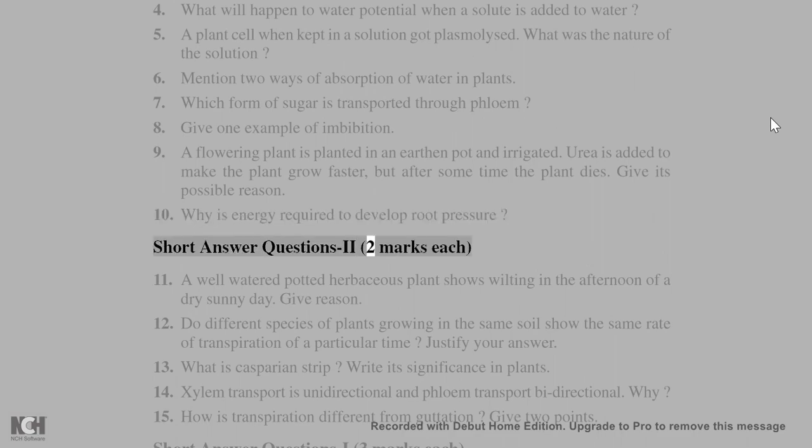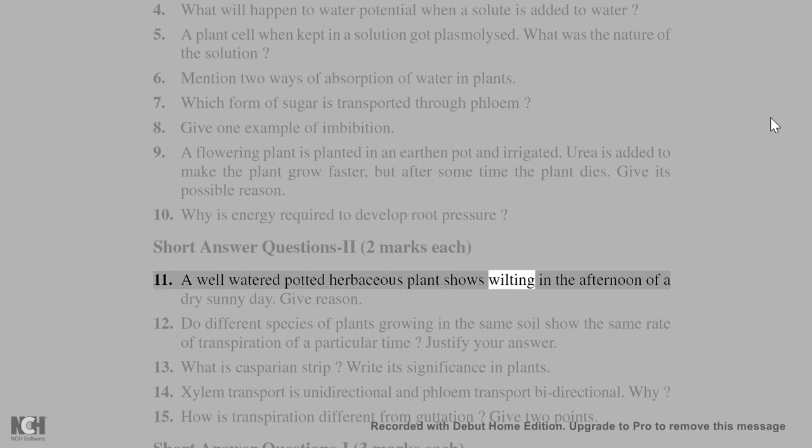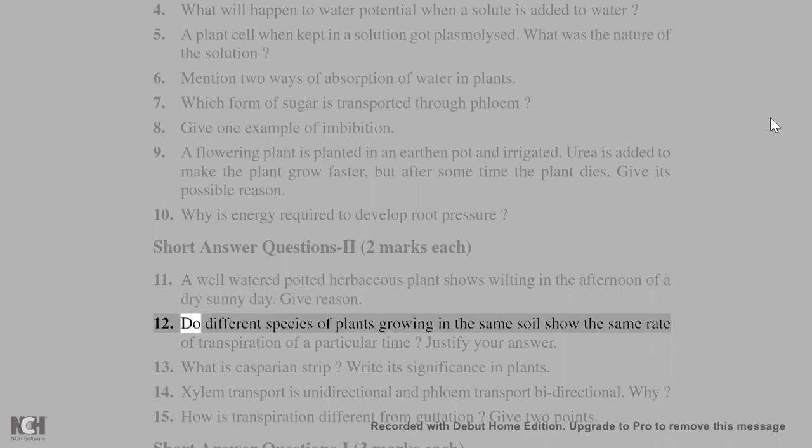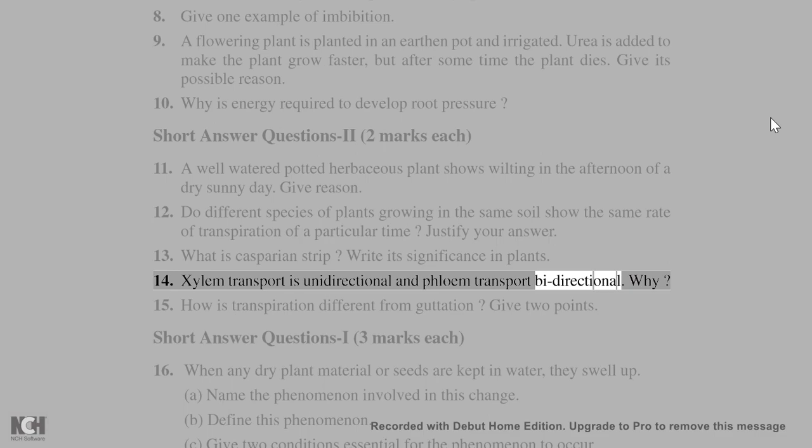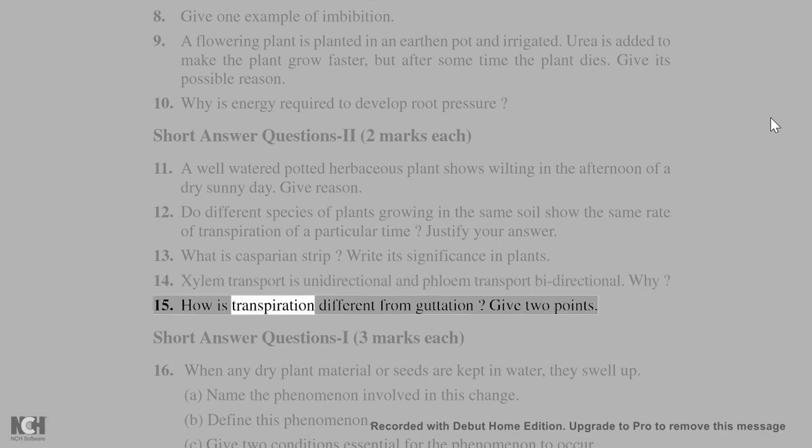Short answer questions, 2 marks each. 11. A well-watered potted herbaceous plant shows wilting in the afternoon of a dry sunny day. Give reason. 12. Do different species of plants growing in the same soil show the same rate of transpiration at a particular time? Justify your answer. 13. What is Casparian strip? Write its significance in plants. 14. Xylem transport is unidirectional and phloem transport bidirectional. Why? 15. How is transpiration different from guttation? Give two points.